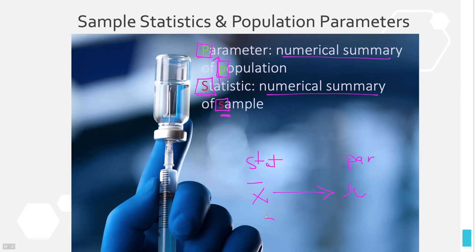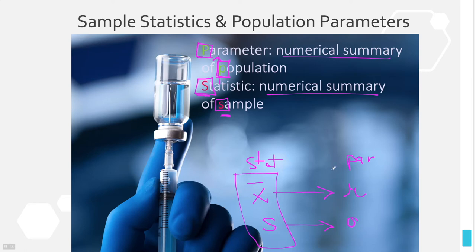Another statistic might be the sample standard deviation, S. It estimates the population standard deviation, which is sigma. So these things — x-bar and S — are measurements of the sample, while mu and sigma are measurements of the population. Parameter and population go together; statistic and sample go together.